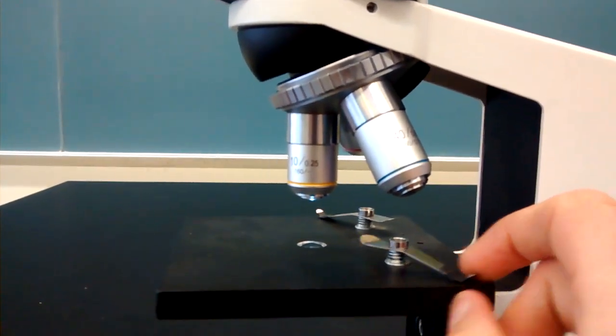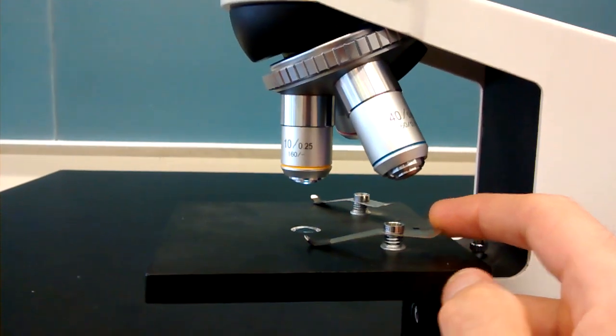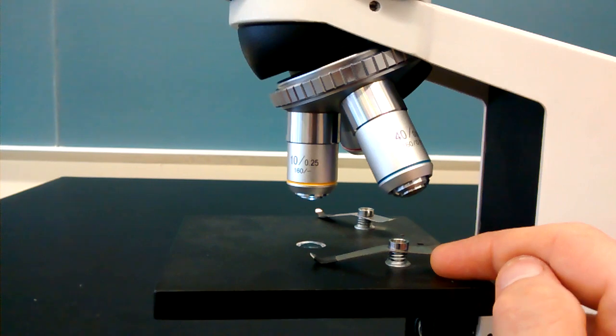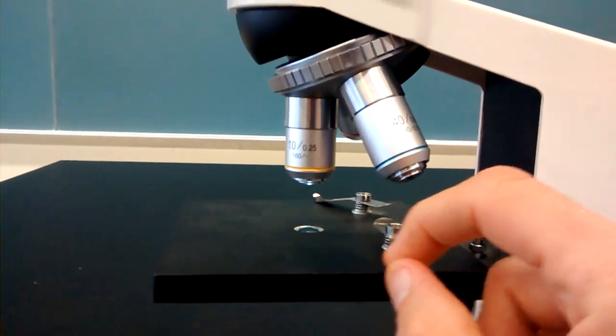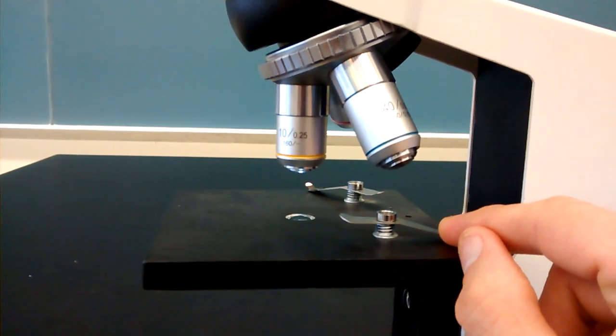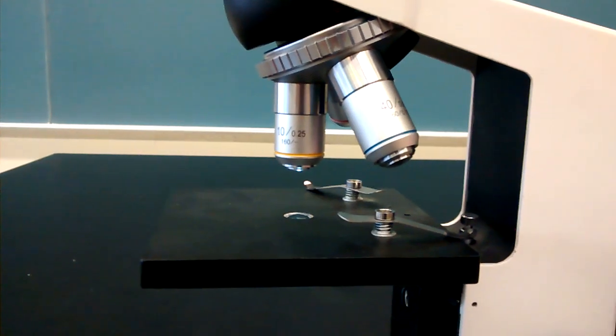And there are two stage clips that can help to hold your slide into place. We typically aren't going to use these because many times we're going to be looking around on a slide. So I just turn these around backward. You're not going to be moving your microscope when using it. So your slide isn't going to be moving around on you.